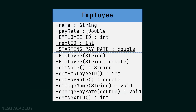Now let's look at this example: a class called Employee. It has a private string attribute called name, a private double called payRate, and a private integer attribute called EMPLOYEE_ID written in snake case with capital letters — this is how we represent constants or final variables in a UML class diagram. There is also a private static integer attribute called nextId, and a public static constant double attribute.